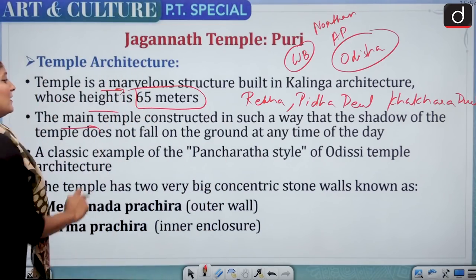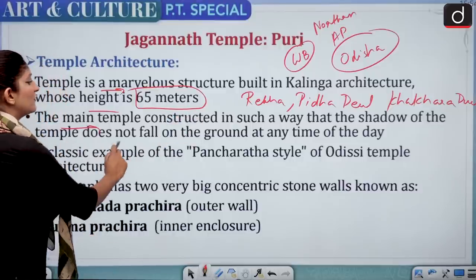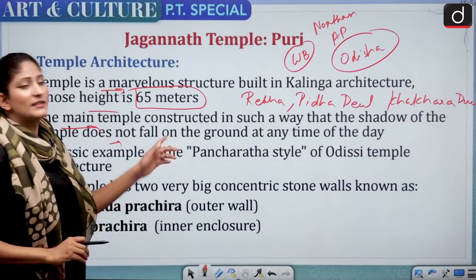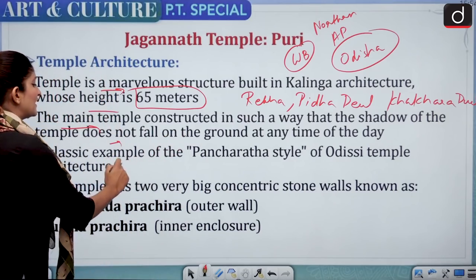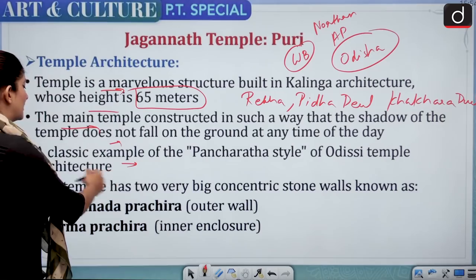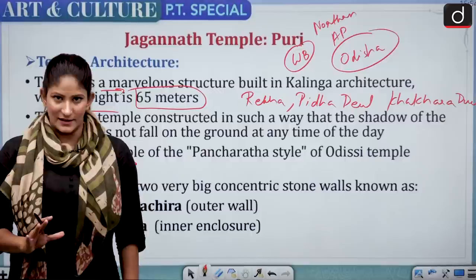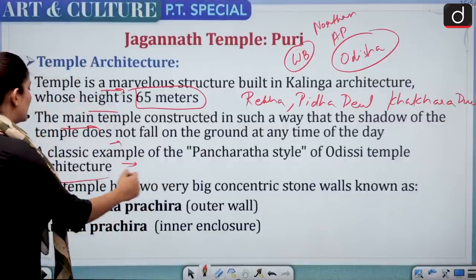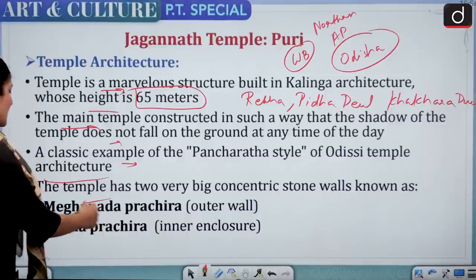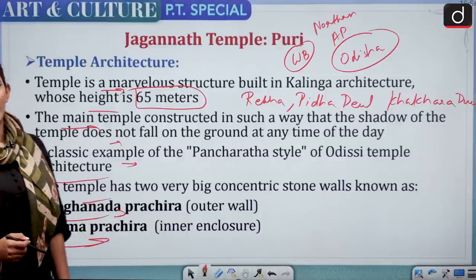The main temple is constructed such that the shadow of the temple doesn't fall on the ground at any time of the day — a very important preliminary fact. It is a classic example of the Pancharatha style of Odisha temple architecture. Pancharatha means five chariots. The temple has two big concentric walls: Meghanatha Prachira (outer wall) and Kurma Prachira (inner wall).